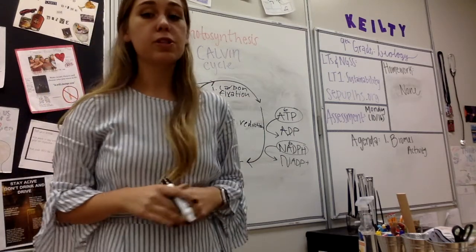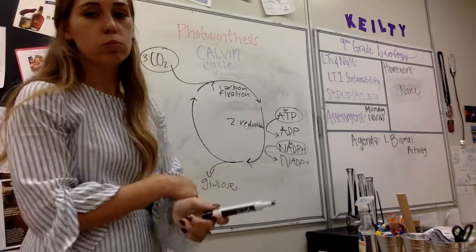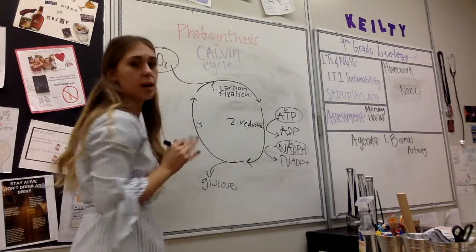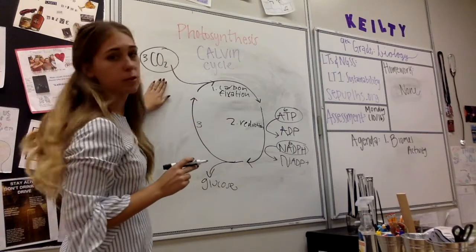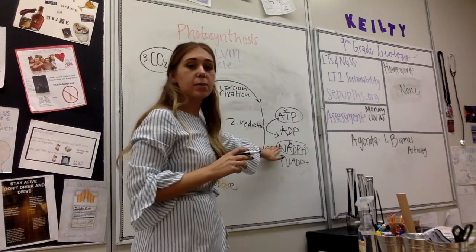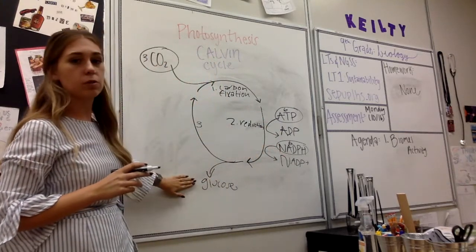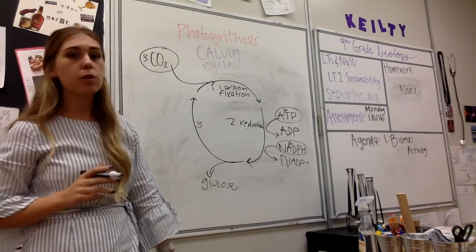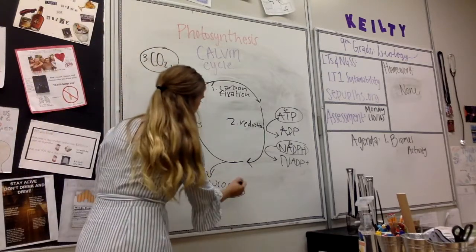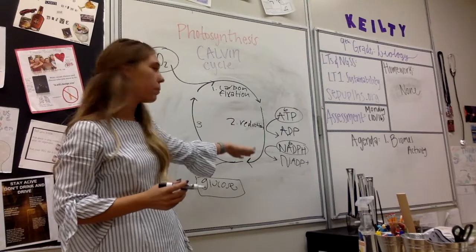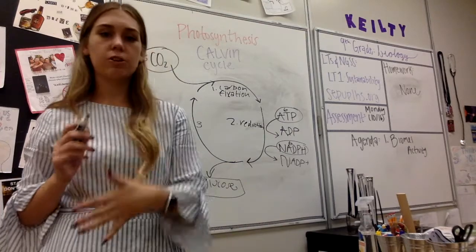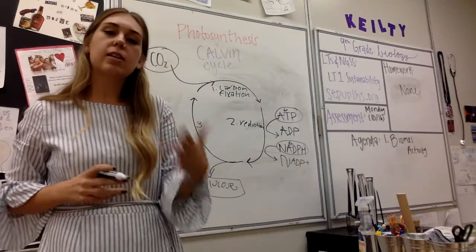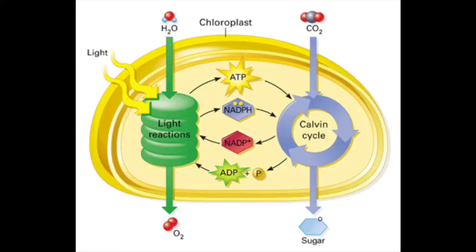After that glucose is produced, we have RuBP regenerated — that is our third step. You don't need to worry about that too much, but what's important to know out of the Calvin cycle is that we start with carbon dioxide, ATP, and NADPH, and that gives us one molecule of glucose. That glucose is then used in cellular respiration, continuing that cyclic pattern.